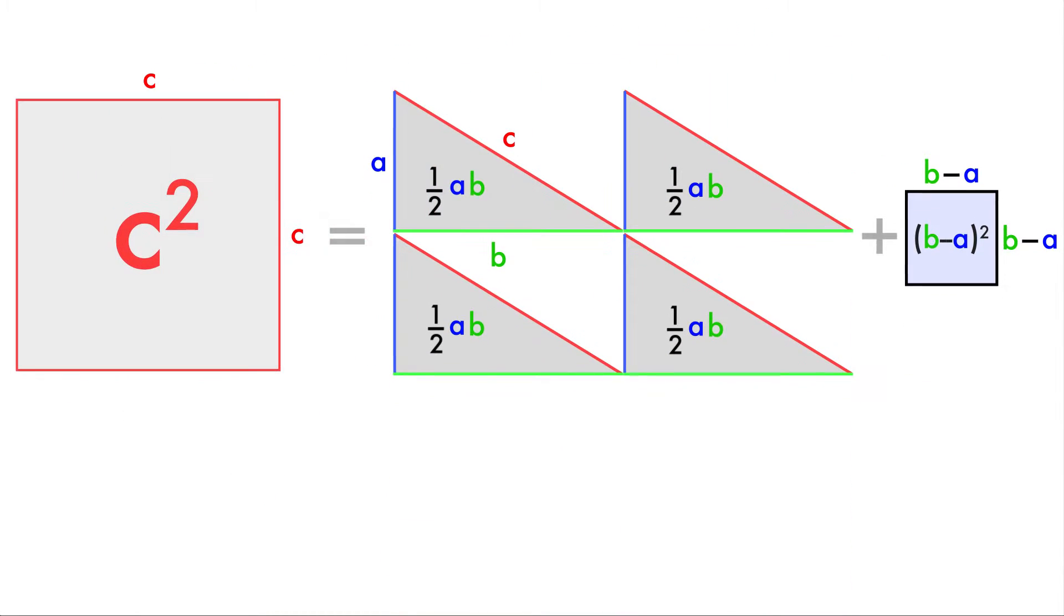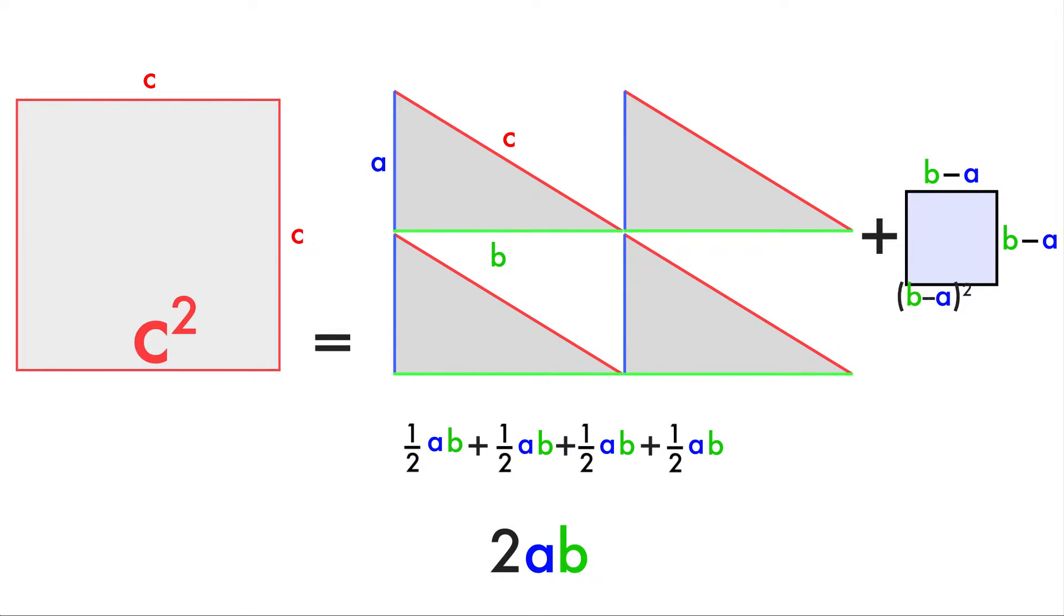So let's go ahead and do a little bit of basic algebra here. So four times one-half is two. And let's go ahead and square this thing out. So if you foil it out here, you'd get b squared minus 2ab plus a squared. And we can see we get some cancellation, right? The 2ab and the minus 2ab cancel each other. So all we're left with is a squared plus b squared. And on the left, we've still got our c squared.